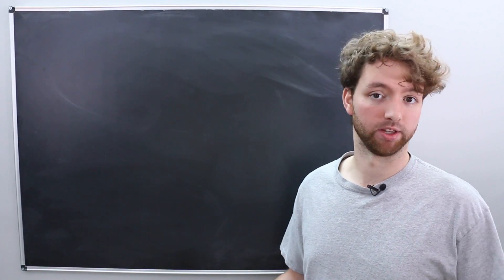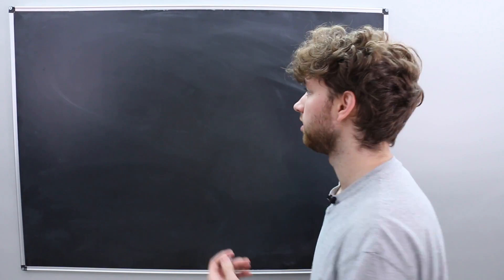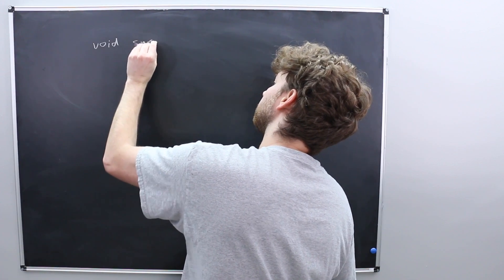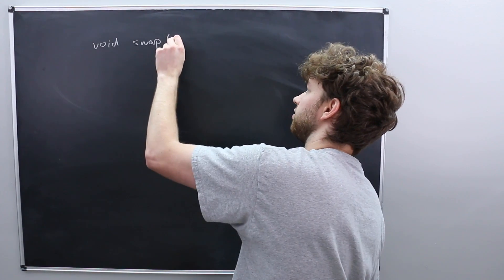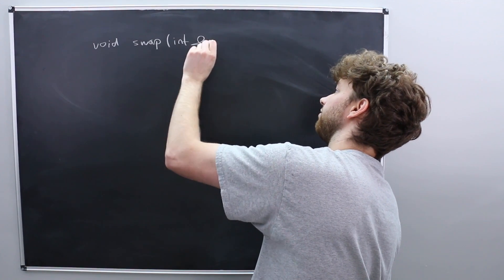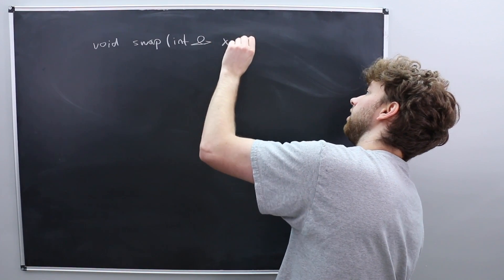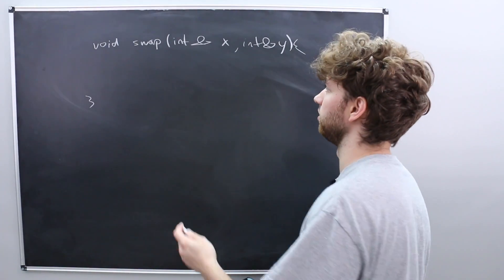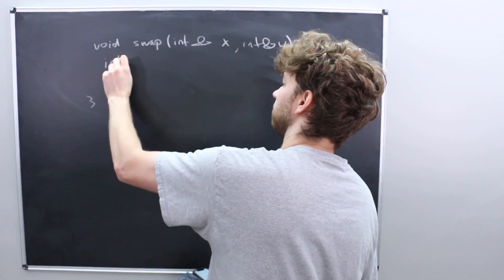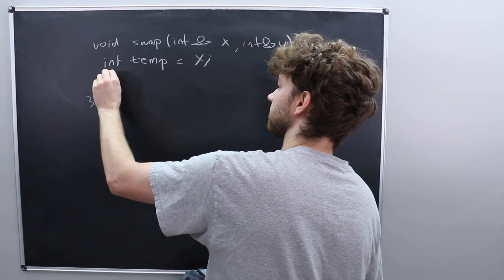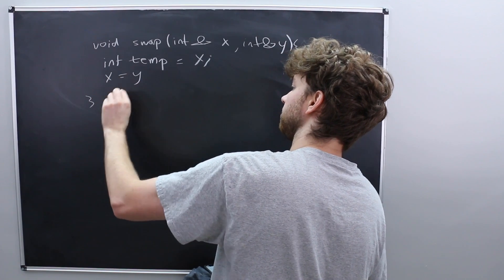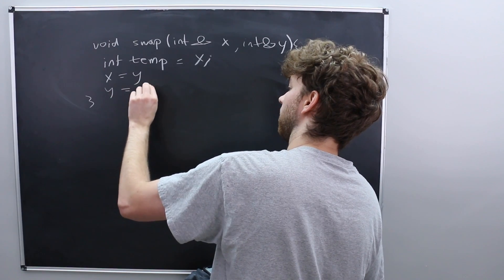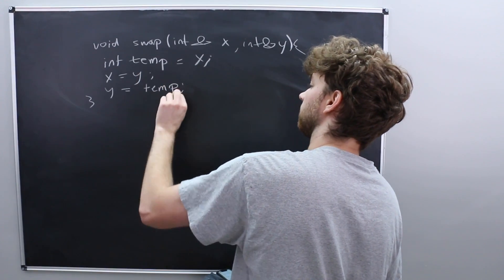So now I want to go over an example of where this is a good thing and that would be swapping data. So if you created a function we can just call it void swap and this can take two things. Let's just say integers and we're getting them by reference. So int x and int y. And then you can do the standard swap algorithm. So you create a temporary variable assign x and then you assign y to x and then you assign temp to y. I think that's right.